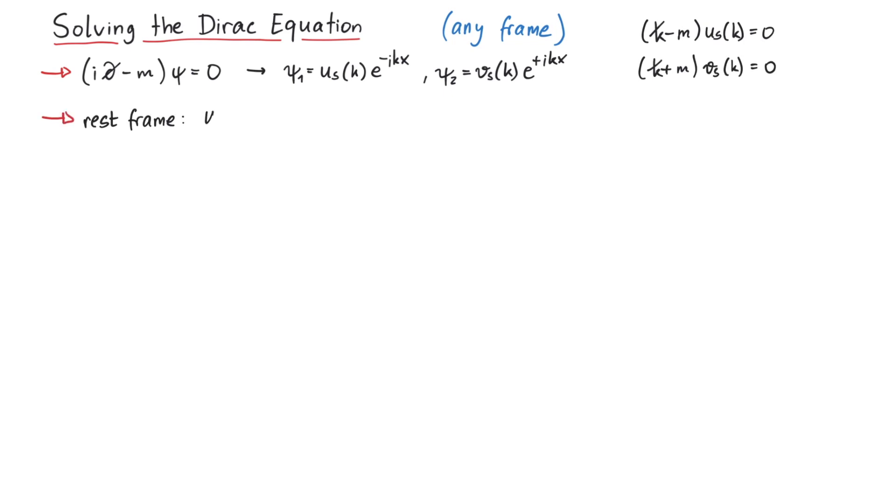In the rest frame of the particle, we can solve these equations. Depending on the representation of the gamma matrices, u and v look slightly different when written in terms of their Weyl spinners.